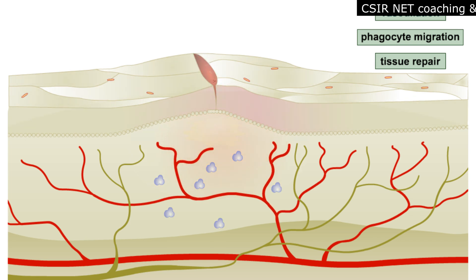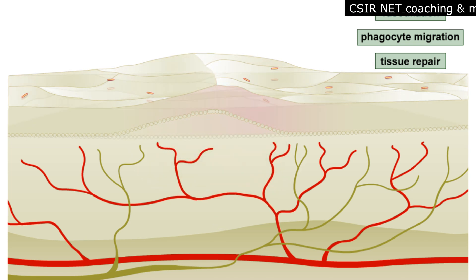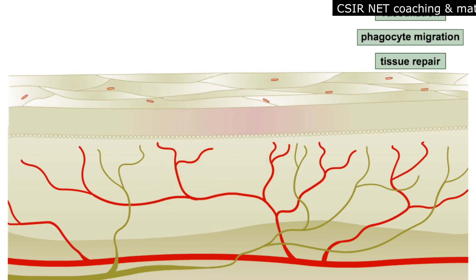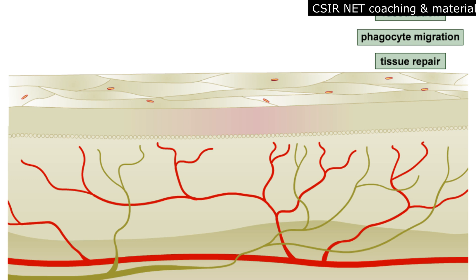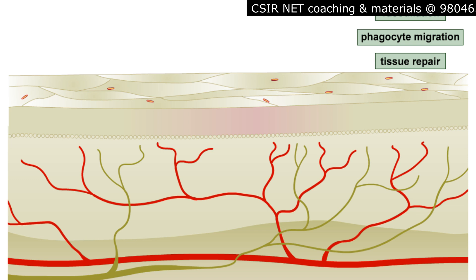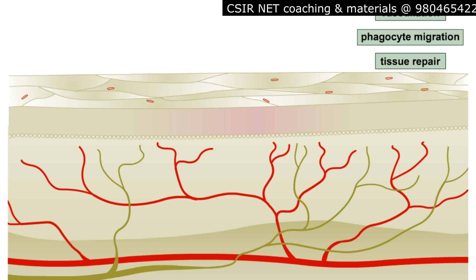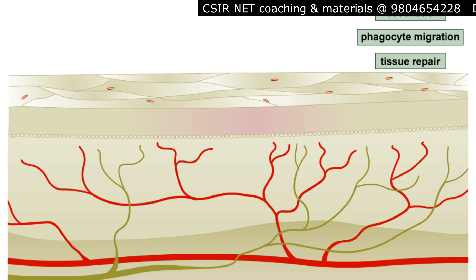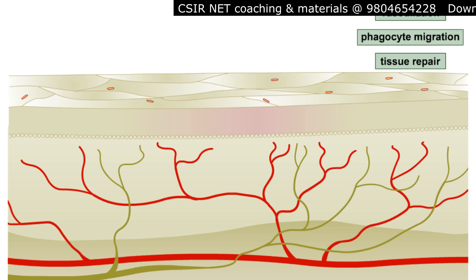The third stage is tissue repair. The final stage of inflammation is tissue repair. The increased delivery of nutrients and oxygen from vasodilation aids in this process. Other components of the blood lead to the formation of a blood clot, which seals off the site of injury.